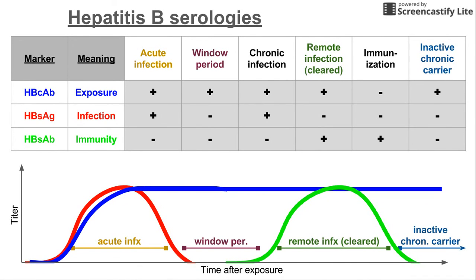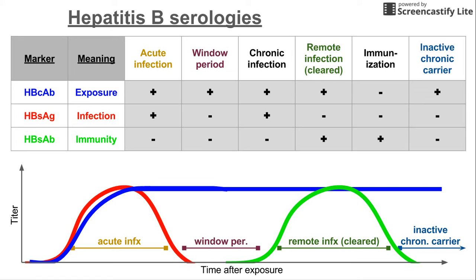A remote infection that has been cleared: the person has been exposed, so the core antibody is positive. They are no longer infected — the surface antigen is negative because the infection was cleared. And the person is now immune, as shown by the rising green line on the chart, so the surface antibody is positive.